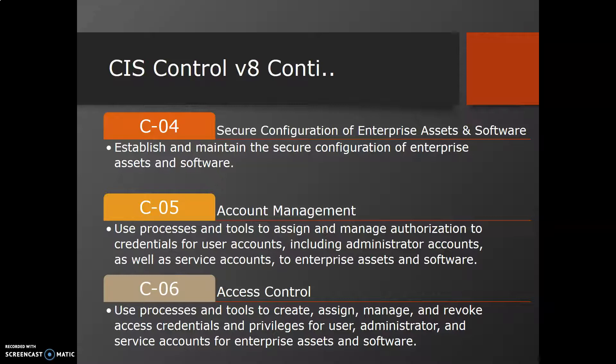The fourth control is Secure Configuration of Enterprise Assets and Software. It talks about establishing and maintaining the secure configuration of enterprise assets and software. By default, when systems arrive they are configured for ease of use, but many protocols, ports, and services are enabled by default, and default credentials or DNS settings may be present. We need to change and alter these configurations as per requirements. If we don't, and put the asset or software into the real world, an attacker can easily take advantage of that.